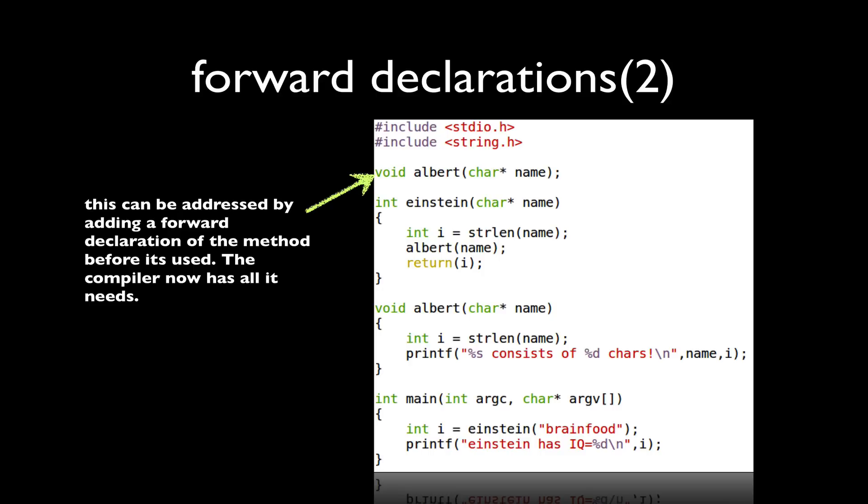So in this case the compiler, when it sees the reference to Albert in the function Einstein, it actually knows what the return value as well as the arguments to that function are.